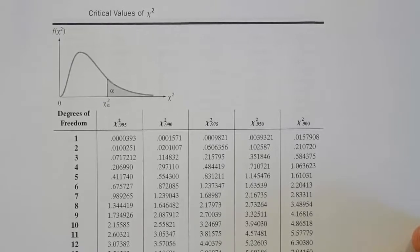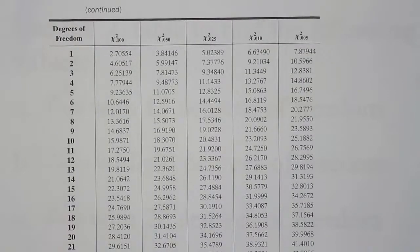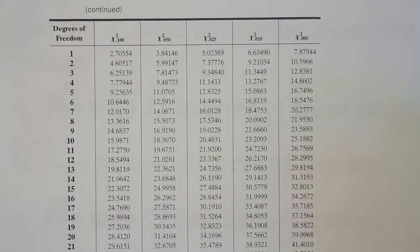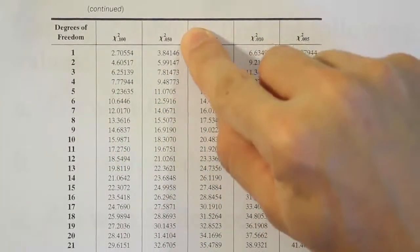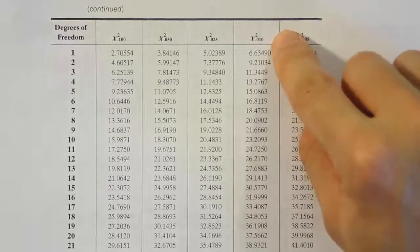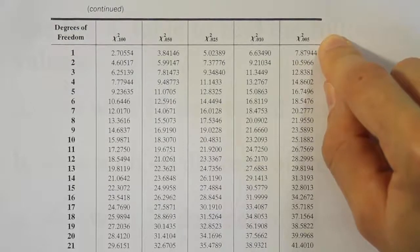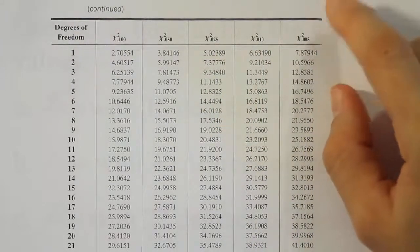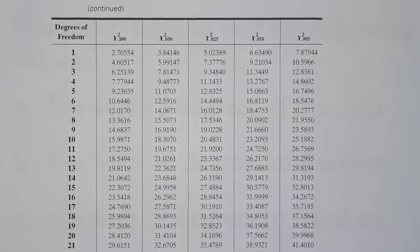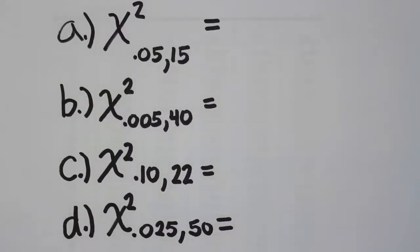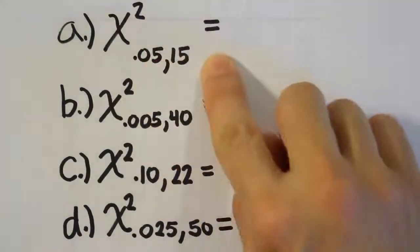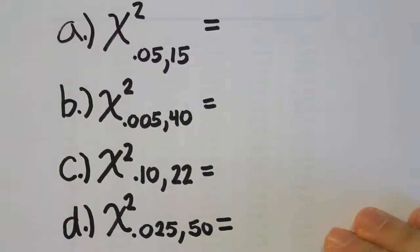We usually want the critical value for a right-tailed test, so we use the second page of this table. The second page shows chi-squared values for right-tailed procedures — degrees of freedom on the left, then columns for chi-squared 10%, 5%, 2.5%, 1%, and 0.5%. Those are the classic alpha values available from this table. The first problem asks for chi-squared₀.₀₅ with 15 degrees of freedom.